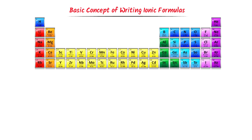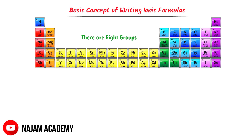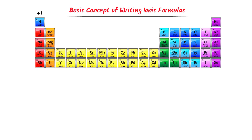According to Mendeleev's periodic table, there are eight groups. The oxidation state of group 1 elements is positive 1. The oxidation state of group 2 elements is positive 2. The oxidation state of group 3 elements starts from positive 1 and goes up to positive 7. In case of non-metals, we start from the opposite side. The oxidation state of group 7 elements is negative 1, group 6 elements is negative 2, group 5 elements is negative 3, and we do not play with the elements of group 4.